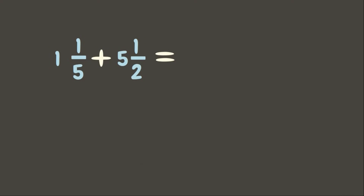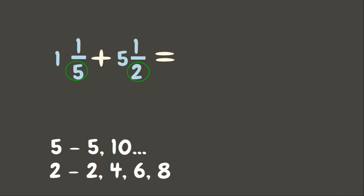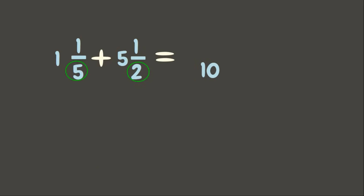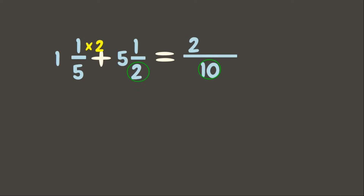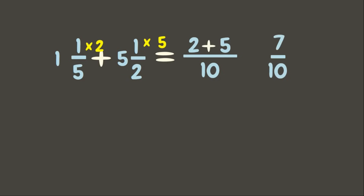Now let's try adding mixed numbers with dissimilar fractions — we use the same method. First, get the LCD, which is ten. Get the equivalent fractions: ten divided by five is two, multiplied to one is two. Ten divided by two is five, multiplied to one is five. Add the numerators: two plus five is seven. Copy the denominator ten. Now add the whole numbers: one plus five is six. Our final answer is six and seven-tenths.